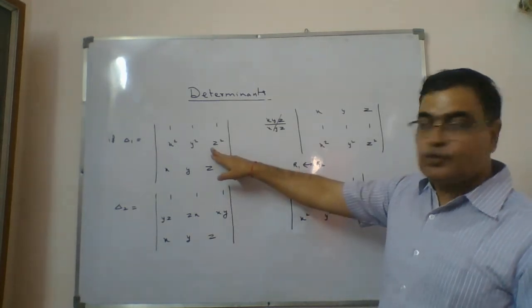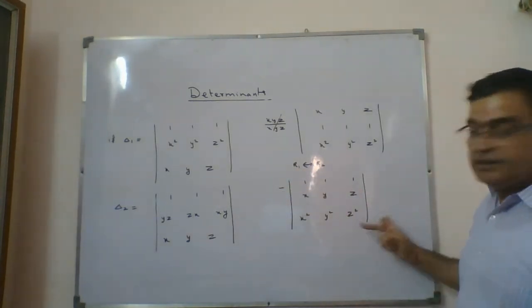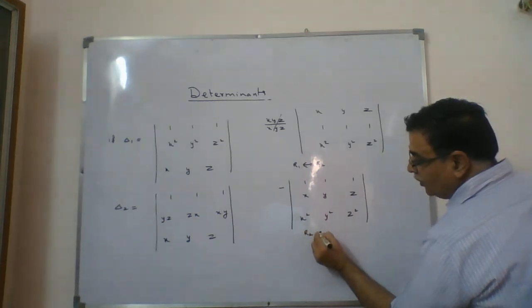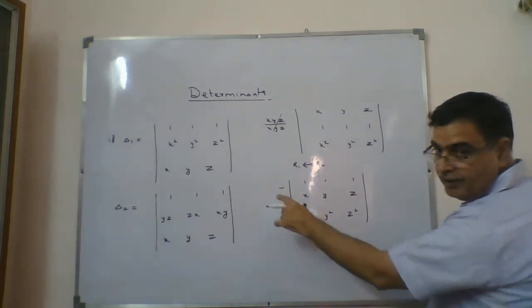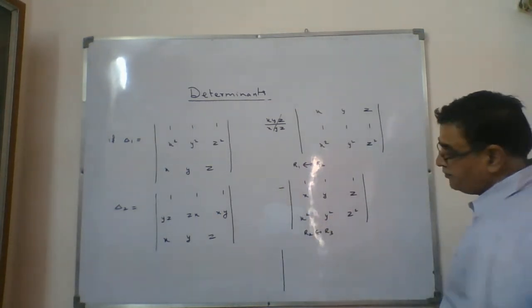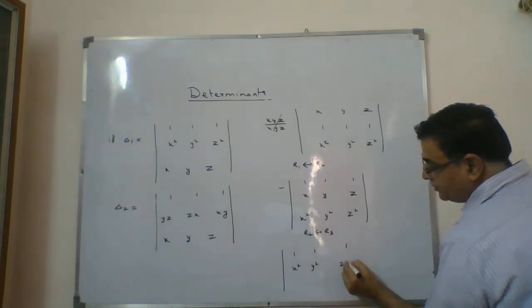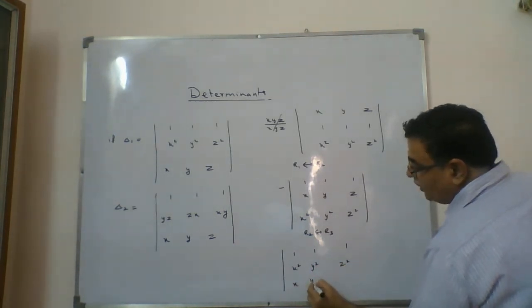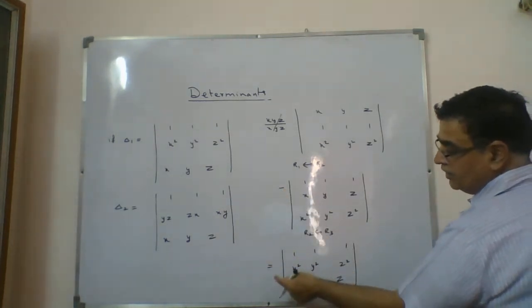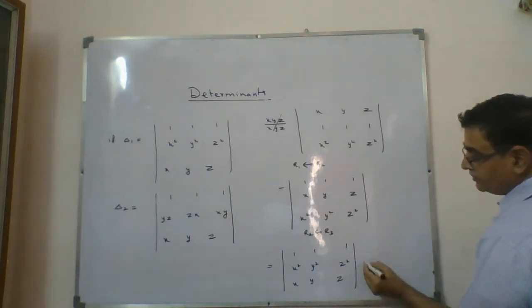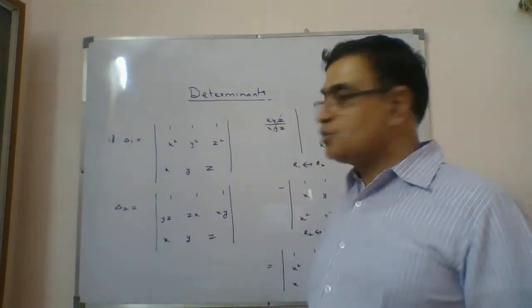Now we want x², y², z² in the second row and xyz in the third row, so one more interchange is needed: R2 and R3 are swapped. One more minus comes, and minus times minus becomes plus. The result is 1, 1, 1 in row 1; x², y², z² in row 2; x, y, z in row 3 — which equals delta 1.